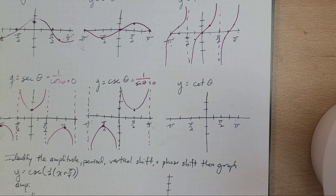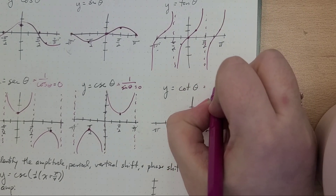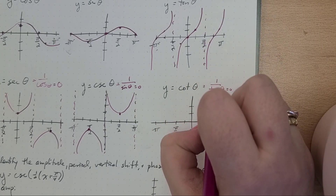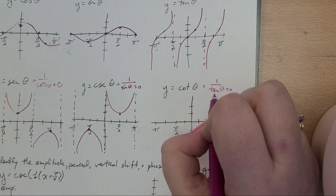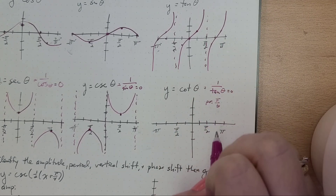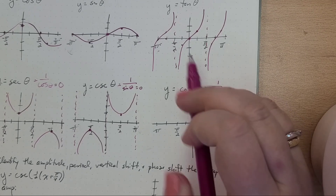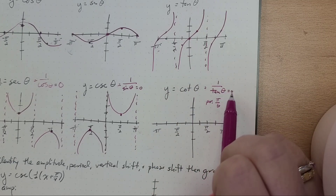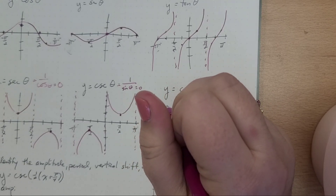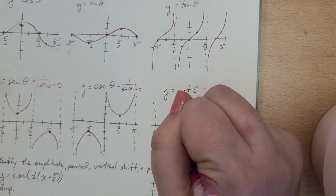And cotangent is actually even easier. Cotangent is 1 over tangent of θ. When is tangent of θ equal to 0? Well, the period is π over b. Tangent of θ is 0 at π, at 0, and at π. And cotangent is just going to go backwards — it goes through 0.